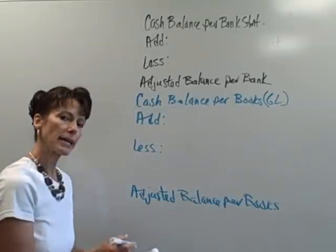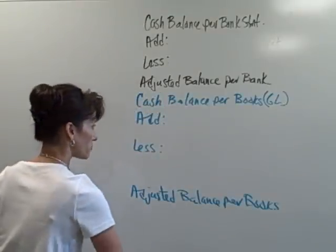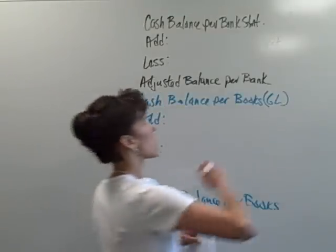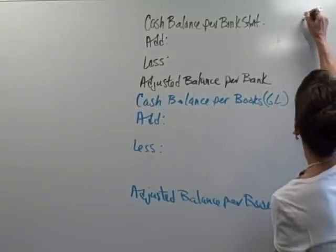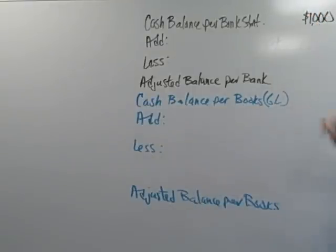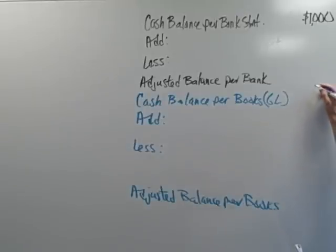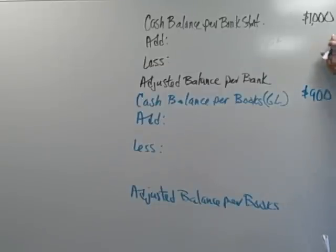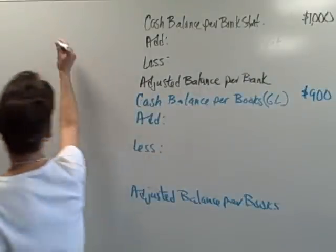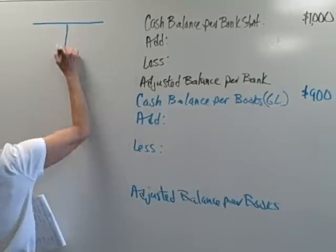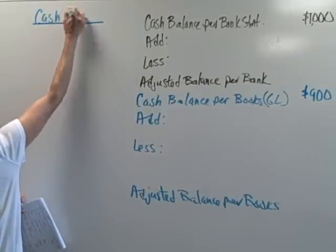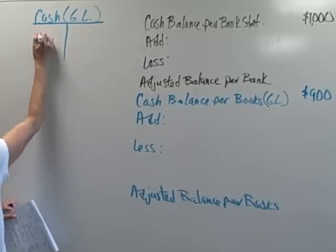Our bank statement shows that we have $1,000. If we look at our general ledger account, our general ledger is showing that we don't have $1,000 — it says that we have $900. We need to reconcile these two numbers. Our general ledger is showing $900.